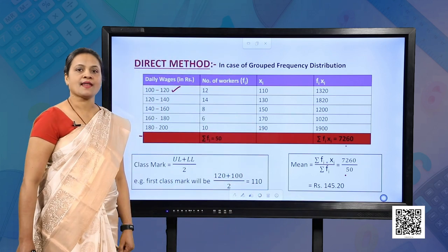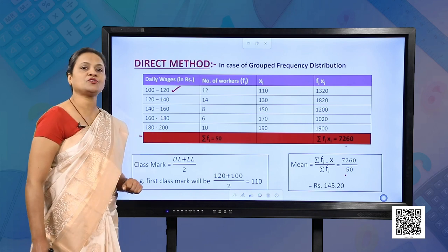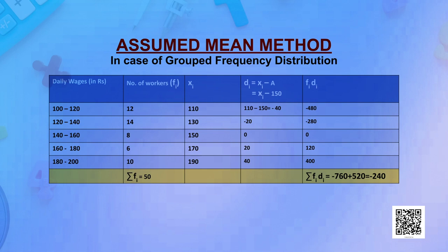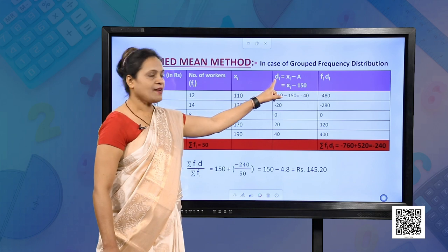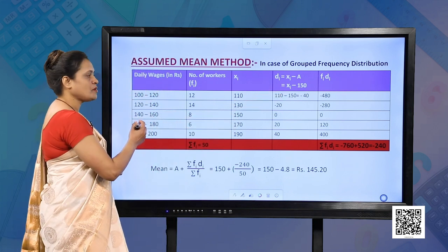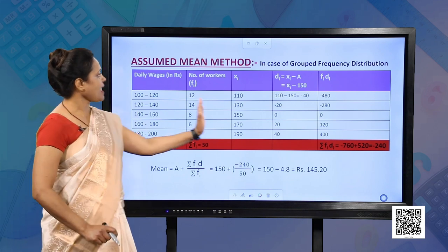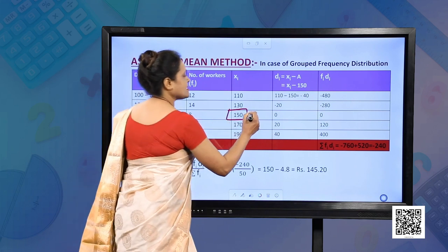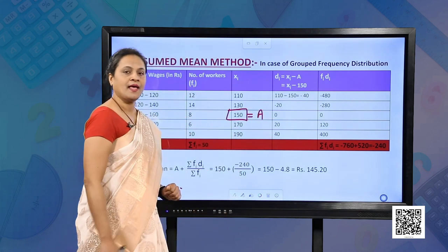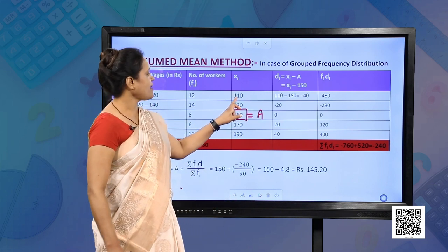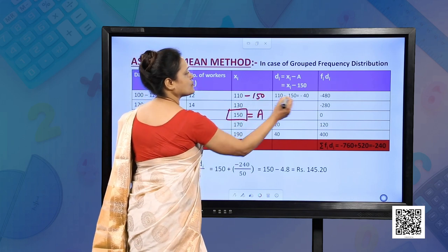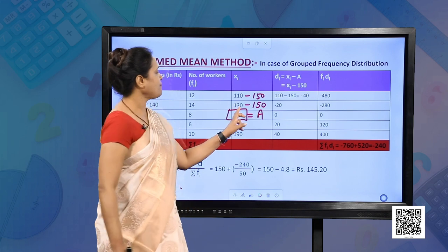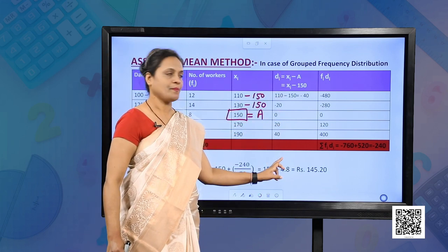This was the direct method. Now let us learn the assumed mean method for this distribution. We calculate Di = Xi − A, where the assumed mean A is the middle Xi value. The Xi values are calculated the same way, and the middle value is 150, so A = 150. For the first class interval: Di = 110 − 150 = −40. For the second: 130 − 150 = −20, and so on.